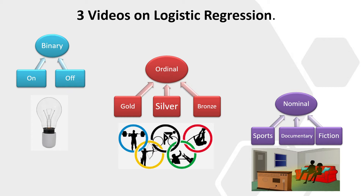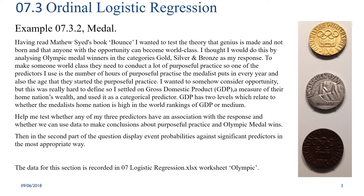The difference between ordinal and nominal logistic regression is that in ordinal logistic regression you have three or more levels of the response and they have an order, whereas in nominal logistic regression they don't have an order. The example for ordinal logistic regression I give is the Olympic Games — the response being the medals available for finalists: gold, silver, and bronze, which have an order.